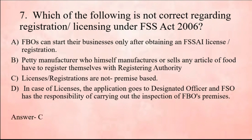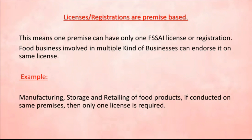Option C is not the right statement because licensing and registration under FSS Act are premises-based. This means that if one single premise carries out different kinds of businesses — manufacturing, storage, and retailing — only one license or registration is required for that one premise. You do not need different licenses for different activities; one license or registration is enough for one particular premise.